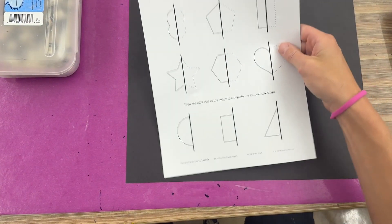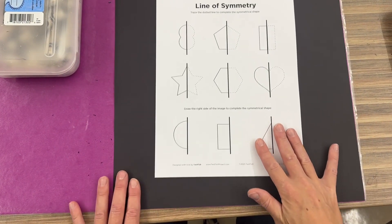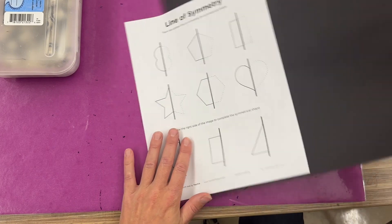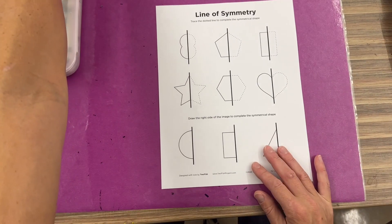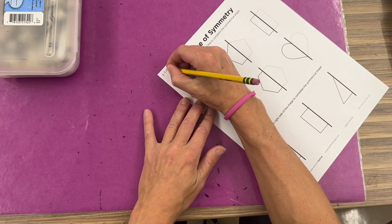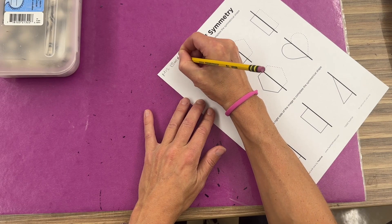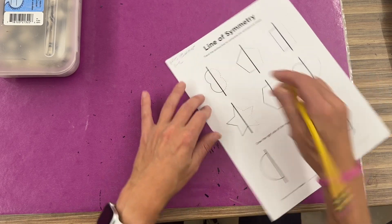Hi first graders. Today we're talking all about symmetry and we are going to start off by completing a worksheet. You're going to make sure that you put your name somewhere on your worksheet and your art code whatever that might be.